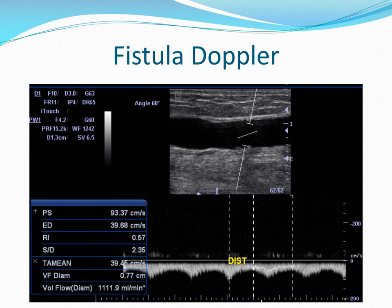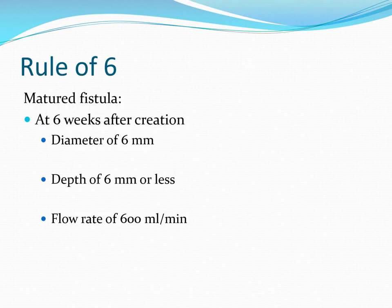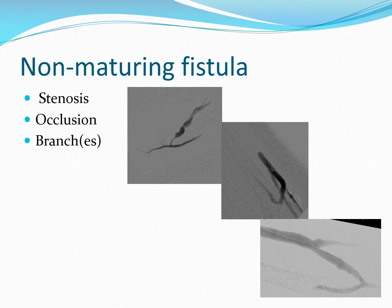Doppler is very commonly used for fistula evaluation, whether for maturation or monitoring after maturation. In this image you can measure the depth of the fistula from skin to fistula, measure the diameter, and measure flow volumes. In this particular case, the flow volume is 1,112 milliliters per minute. According to the rule of six — what is required for a fistula to be designated as matured — at six weeks of creation, we want the diameter to be 6 millimeters, depth less than 6 millimeters, and flow rate to be 600 milliliters per minute or more.